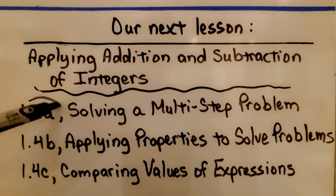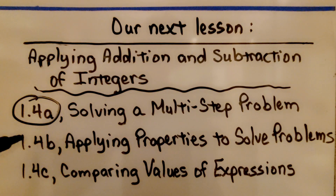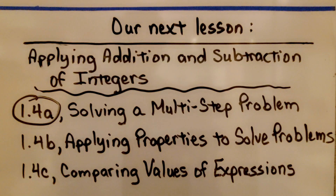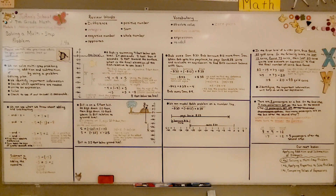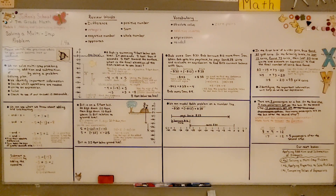We've finished 1.4a and we're going to move on to 1.4b — applying properties to solve problems. We're still talking about adding and subtracting integers. Make sure to underline or circle the important information and pay attention to words that tell you whether a number is going to be negative or positive, or whether you're going to add or subtract. Have a wonderful day, and I hope to see you next time!